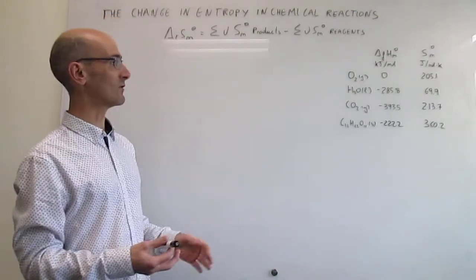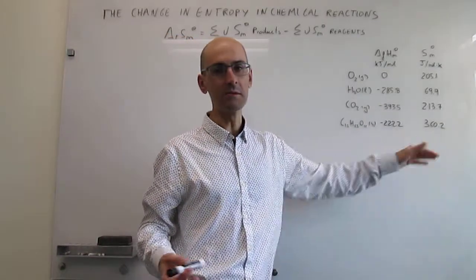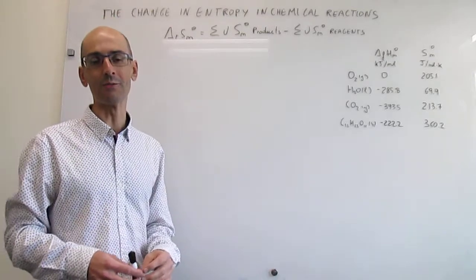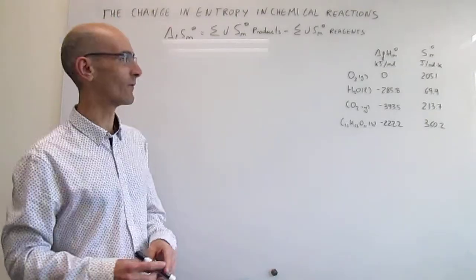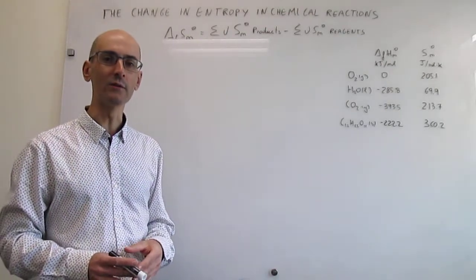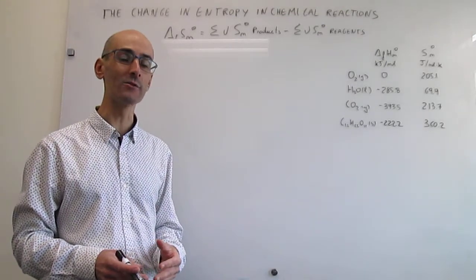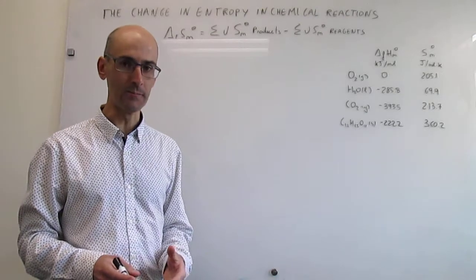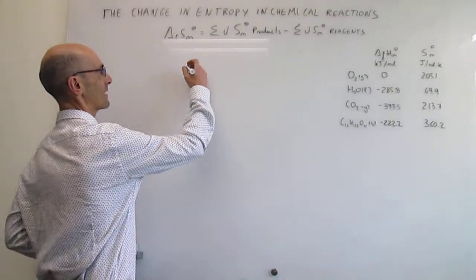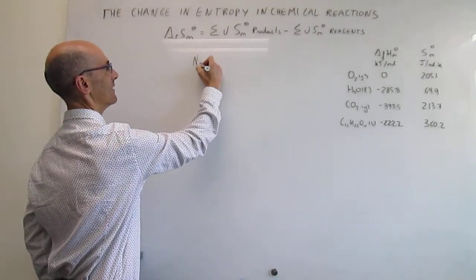We're simply going to take those values described in the prior couple of videos and see how simple it really is to use them to calculate changes in entropy in a chemical reaction. Before we do that, I want to draw your attention to the fact that predicting the sign of the change in entropy in a chemical reaction is very straightforward. For example, think about a simple chemical reaction like the synthesis of ammonia from hydrogen and nitrogen.